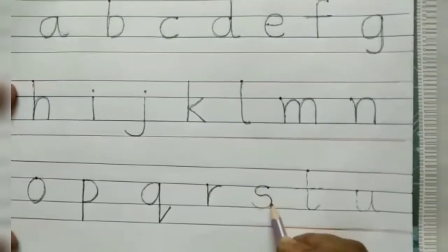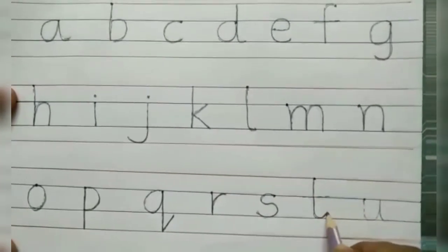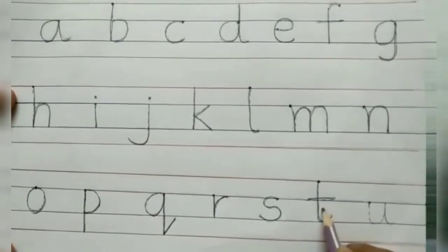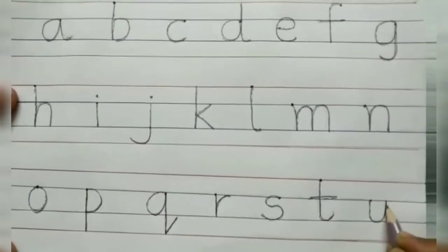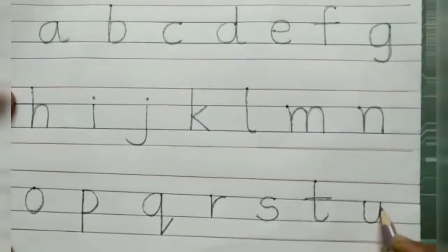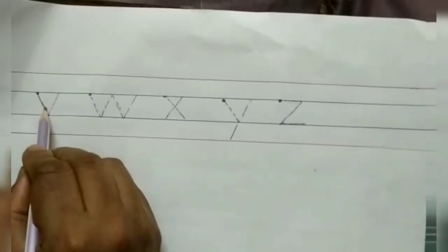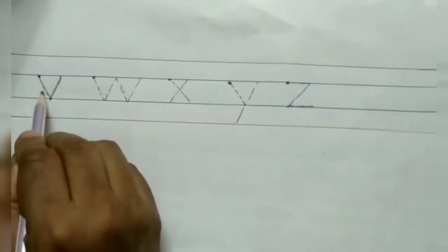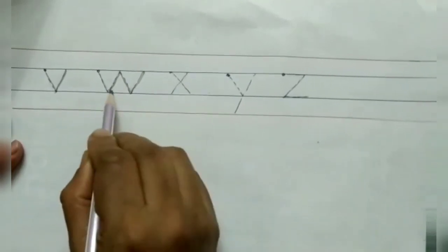S — half circle and half circle. T — down and hook, sleeping line. Tall letter. U — swing up and out. V — slanting line, down and up. Small letter — down, up, down, up. W.